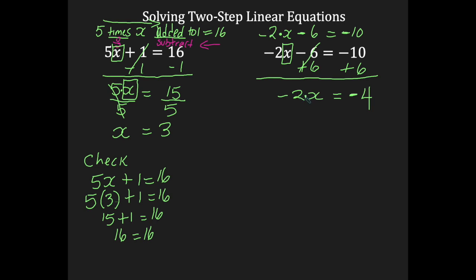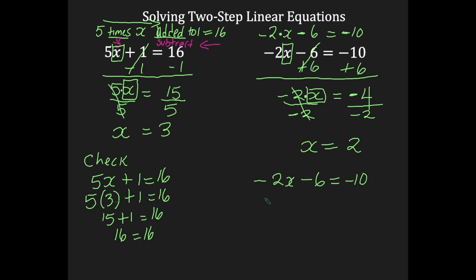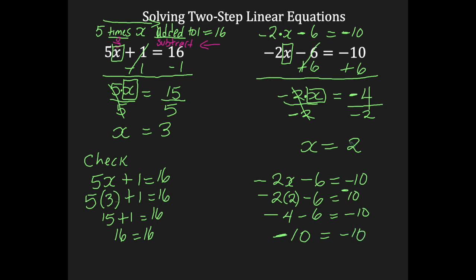The negative 2 is connected to the x by multiplication. The opposite of multiplication is division. We're going to divide by negative 2 to isolate x. The negative 2s cancel each other out, leaving 1x. Over here we're dividing: two negatives give a positive, and 4 divided by 2 is 2. To check: negative 2x minus 6 equals negative 10; substituting x=2 gives negative 2 times positive 2 minus 6 equals negative 10. Negative 4 take away 6 — negatives following each other, so add and keep the sign — gives negative 10, which equals negative 10. Answer is correct.